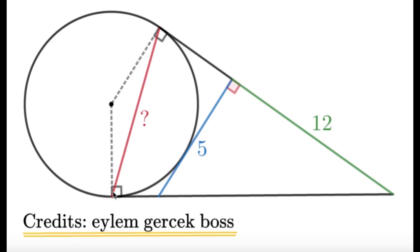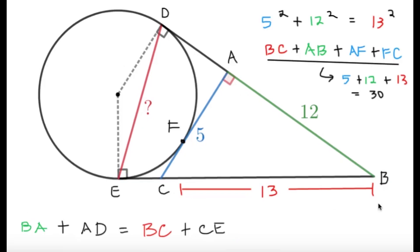Alright, so let's try to make some primary observations and see what we can do to answer this question. First of all, we have a right triangle here. Lengths are 5 and 12, I think it's pretty obvious.